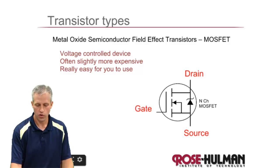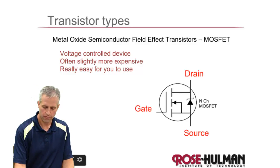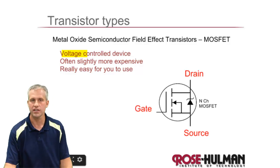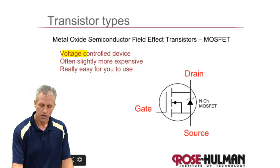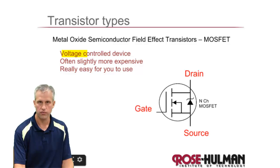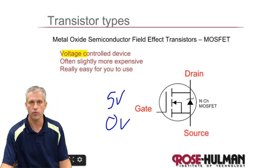The most important thing to know about MOSFETs is they are voltage-controlled devices, which makes them really easy to use. You turn them on with any voltage above 2.2 — technically most people turn them on with 5 volts — and turn them off with 0.